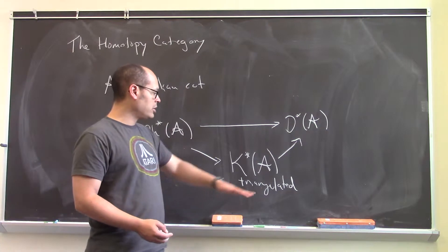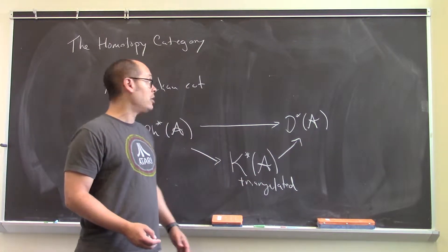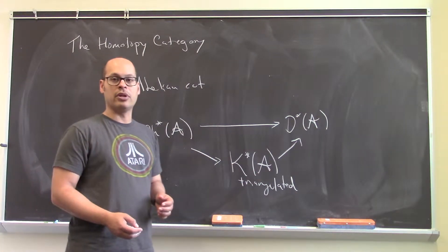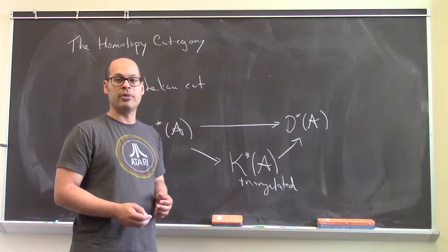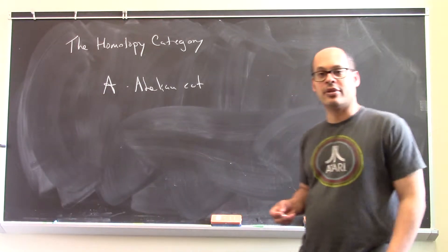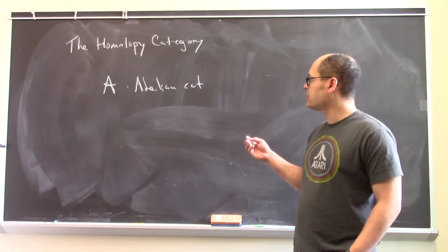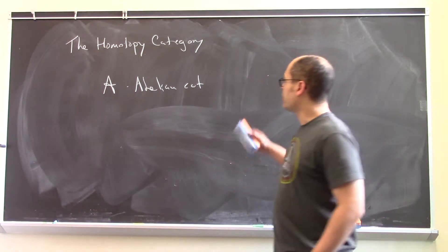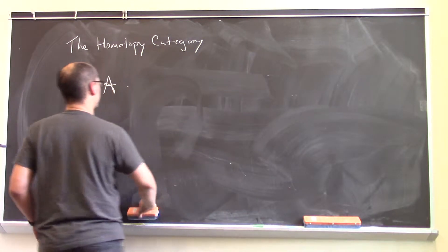So, for this reason, we're going to first start by talking about this homotopy category, and then eventually make our way to the derived category from there. So, to define the homotopy category, well, we are going to start, actually not with an abelian category, necessarily, but just with an additive category.